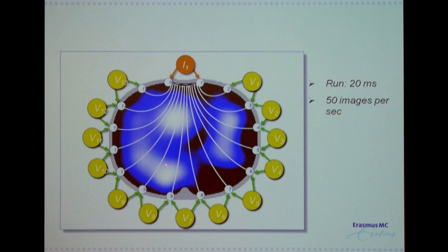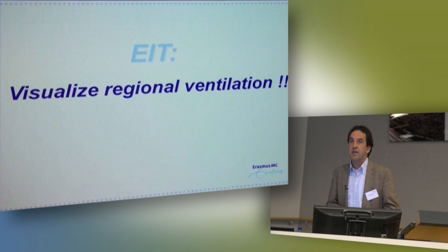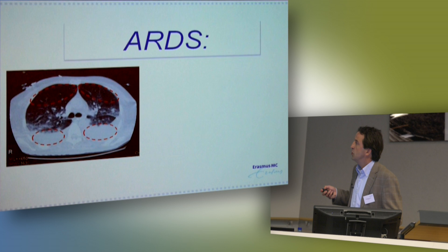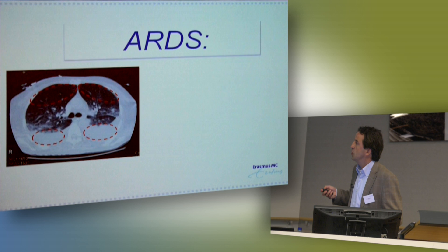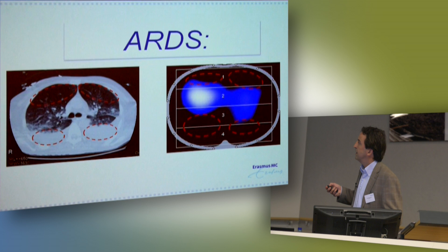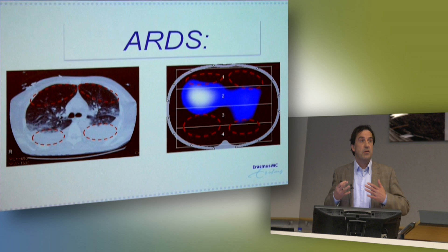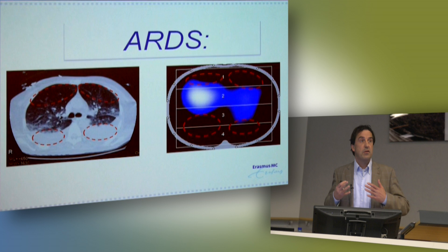You see a lot of impedance change on the ventral side, dorsal side, and here in the middle of the left lung. In contrast with CT, with EIT due to the spatial resolution you only visualise regional ventilation. For example, when you have an ARDS patient, with a CT you see collapse and atelectasis at the dorsal side and normal lungs at the ventral side. When you make an EIT image from this patient, you see black on the dorsal side, but also on the ventral side when there is hyperinflation. When you don't see ventilation at the ventral side, you don't see impedance change — there is still lung tissue, but no ventilation.